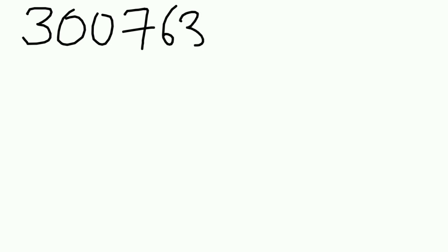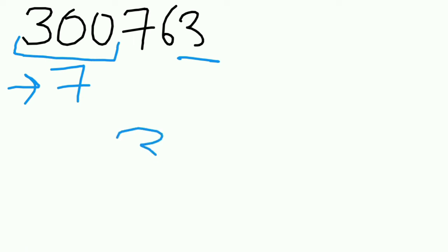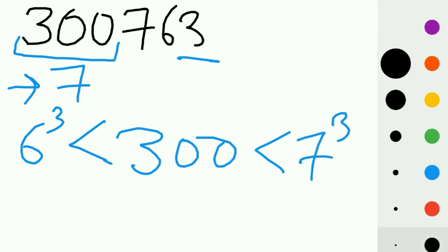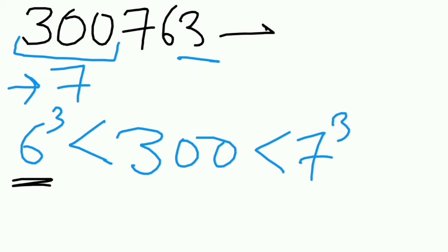Here's another example: 300763. If we take a look at its last digit, the last digit of the cube root will be 7. The first three digits are 300, which is greater than 6 cubed and smaller than 7 cubed. So the first digit will be 6 and your answer will be 67.